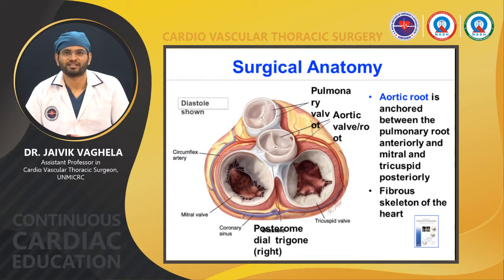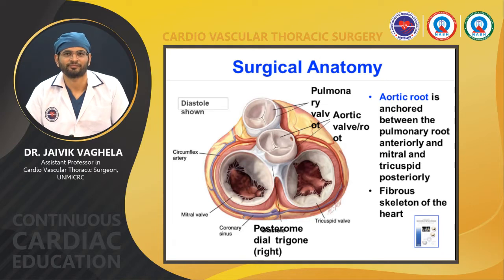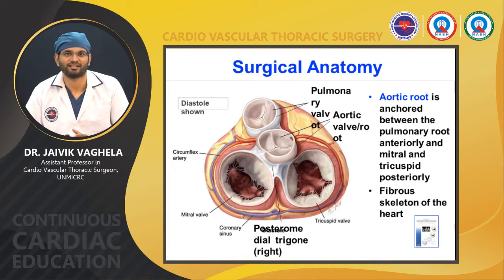Regarding surgical anatomy, the aortic root is anchored between the pulmonary root anteriorly and the mitral posteriorly. It is also comprised by the fibrous skeleton of the heart. As seen in the diagram, it is wedged between all three walls: pulmonary, mitral, and tricuspid.